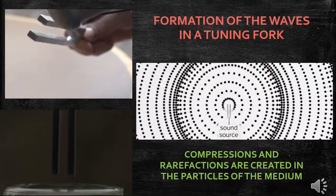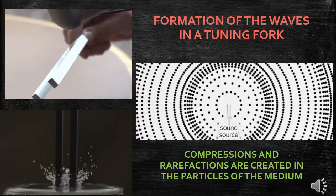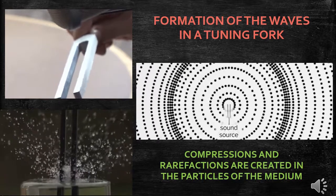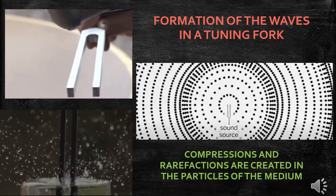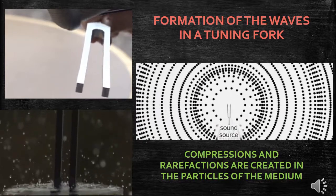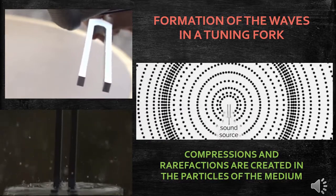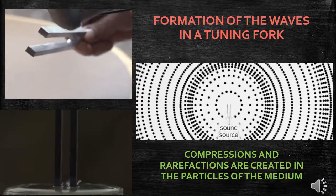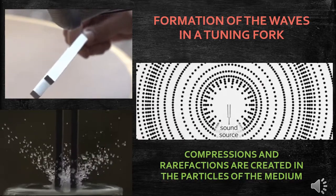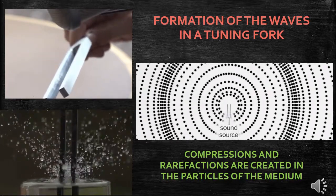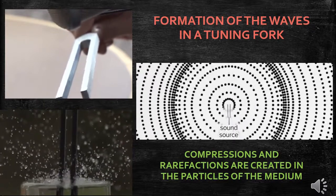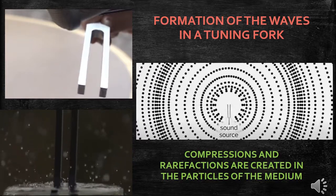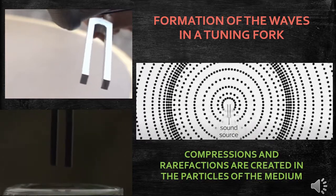The fourth example of wave motion is the formation of waves in a tuning fork. When we strike a tuning fork on a rubber pad, the prongs of the tuning fork vibrate about their mean positions, moving outward and inward as shown in the video. When a prong moves outward, it pushes the layer of air in its neighborhood, causing more accumulation of air molecules in that region, and hence the density and pressure increase.